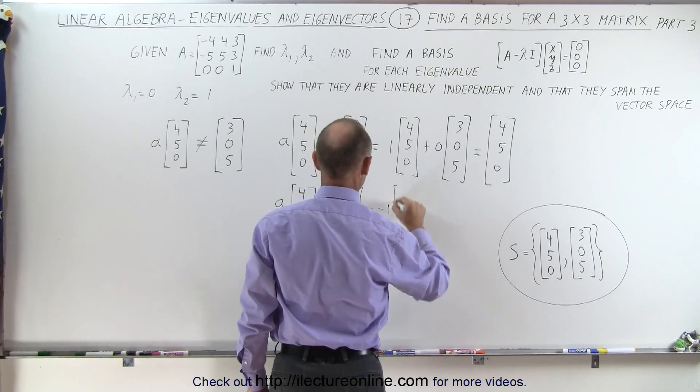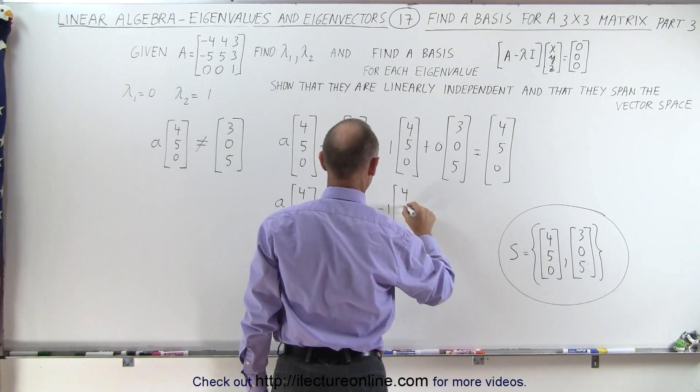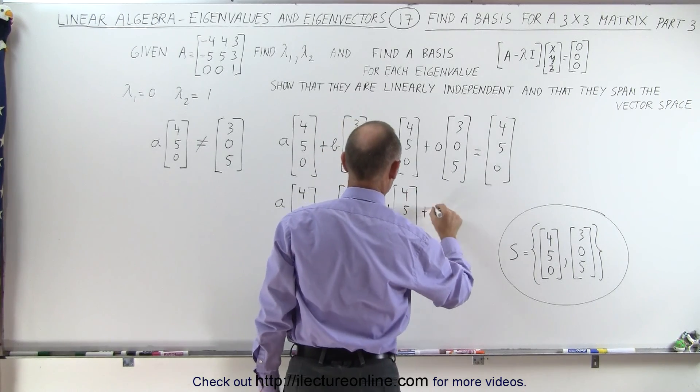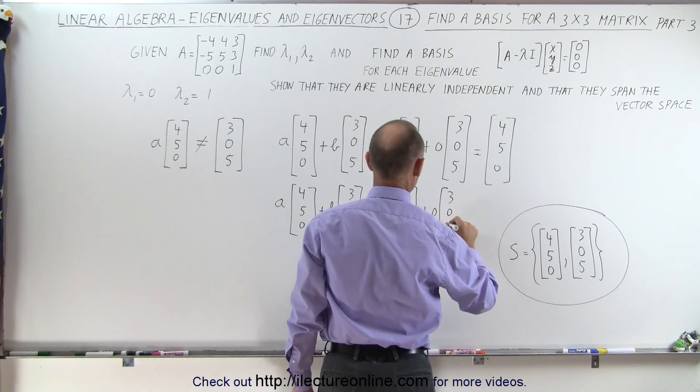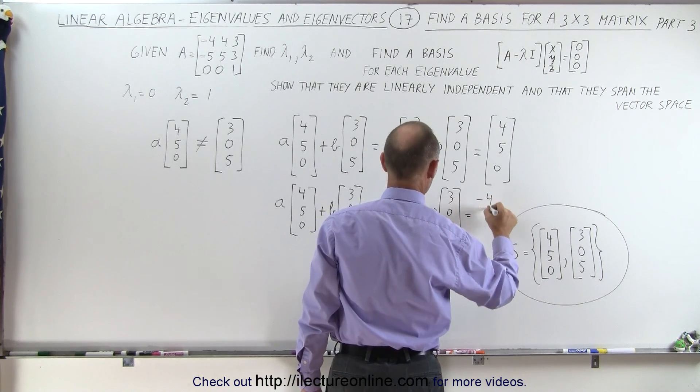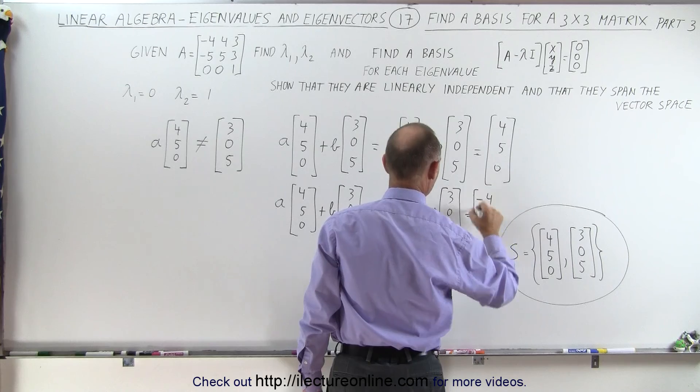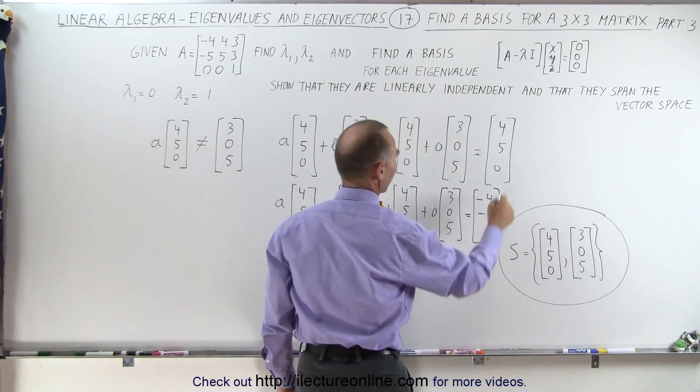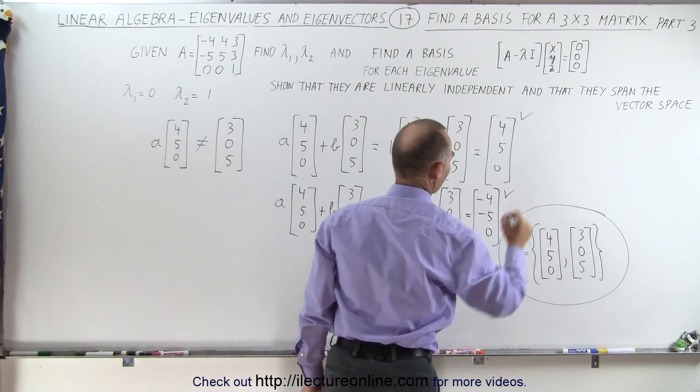So negative 1 times [4, 5, 0] plus 0 times [3, 0, 5] gives me [-4, -5, 0]. So that is the first column. So we got the second column and the first column.